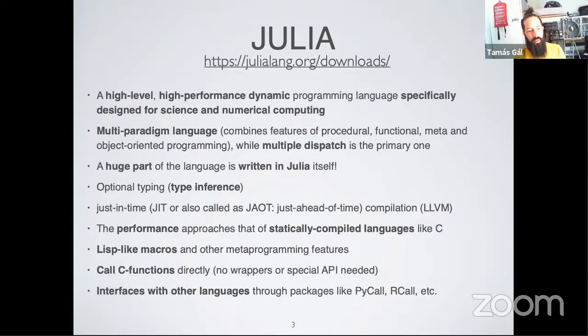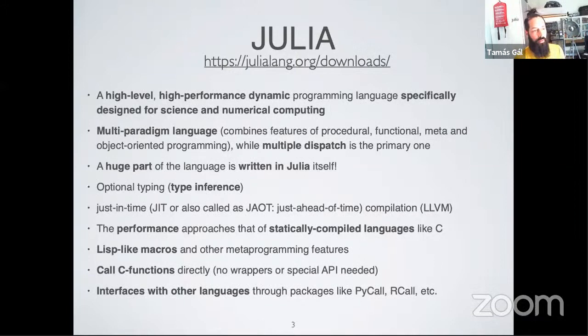Julia is a just-in-time — also called 'just ahead of time' in the community — compiled language using LLVM. It's built into the language itself, unlike Numba for Python. Its performance approaches that of statically compiled languages like C. It also has Lisp-like macros and other metaprogramming features to express otherwise very complicated things.